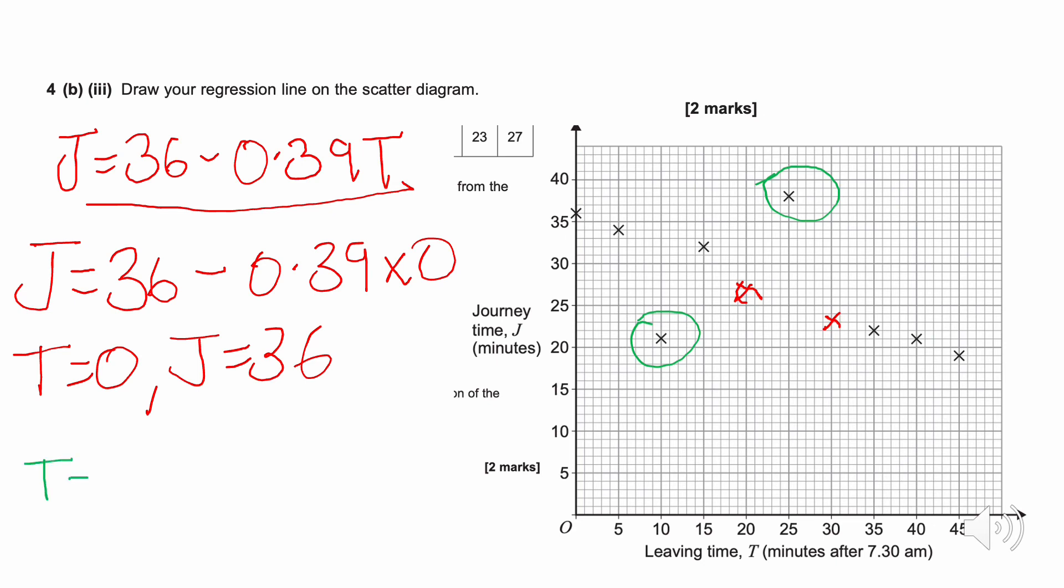So when T is 40, and substitute it in here. So when T is 40, J is 36, take away 0.39 times 40. So we can stick that in the calculator, 36, take away 0.39 times 40. And we get 20.4. So when T is 40, J will be 20.4. So 40, it's very close to be quite honest, isn't it? 20.4. It's probably slightly lower than that cross that's there.